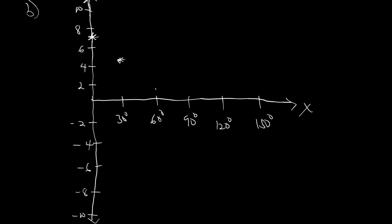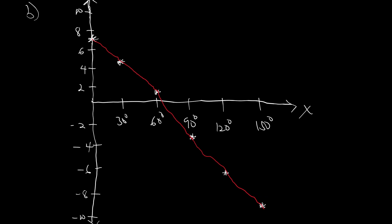When x = 90, y = −3, so −3 will be somewhere here. When x = 120, y = −6.1, so −6.1 will be here. And when x = 150, y = −7.6, so −7.6 would be somewhere here. If you draw a curve through these points, you get something like this. So that would be it for question 6b.